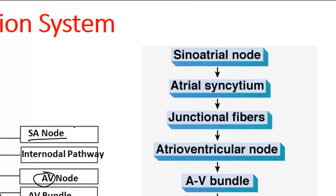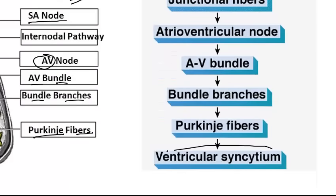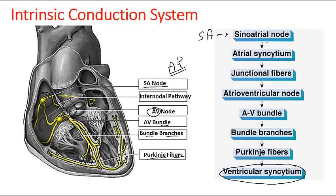The action potential is fired up at the SA node, then distributed and transferred to the Purkinje fibers and ultimately to the ventricular syncytium. The movement starts with the SA node, then to the atrial syncytium, junctional fibers to the AV node, then AV bundle, then bundle branches, Purkinje fibers, then ventricular syncytium. The SA node is here, the AV node is this one, and Purkinje fibers are distributed through the endocardium in the ventricular area.